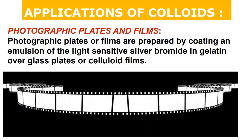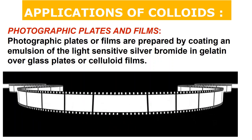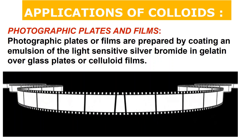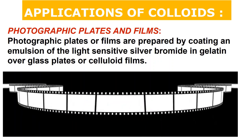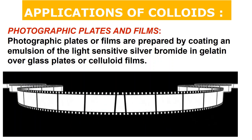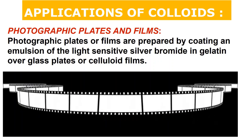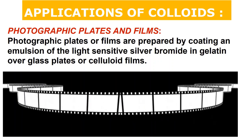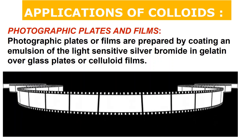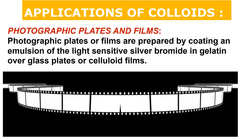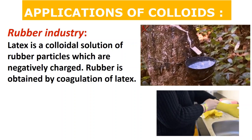Photographic plates, films, and X-ray films are made by coating an emulsion of light-sensitive silver bromide in gelatin. Silver bromide is dissolved in water, gelatin is added, and this photo-sensitive mixture is applied to glass plates or celluloid films. They are then exposed to capture images. Although digital chips have replaced this process for photography today, X-ray plates still use this method.